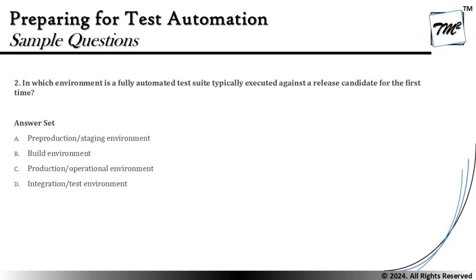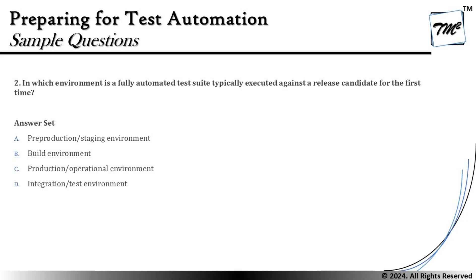The options are: A — pre-production or staging environment; B — build environment; C — production or operational environment; D — integration or test environment. Pre-production is too late to perform these activities because a fully automated test can be performed much earlier — pre-production is more for alpha and beta testing. The build environment supports early tests, but it is not ready for robust test execution because regression tests there are unstable to automate. Full automation is not possible in the dev environment — partial automation, yes, but not fully automated.